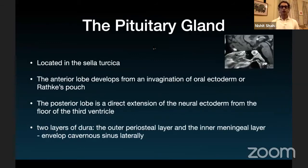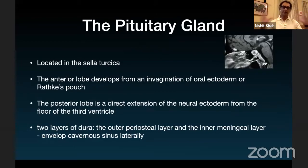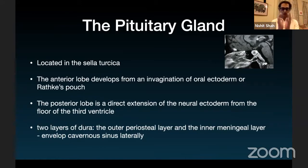The pituitary gland is what we call the master gland of the body and controls a lot of your important endocrine functions. It lies in the center of the head, cradled in the sella turcica, and consists of essentially two parts: the anterior lobe and the posterior lobe. It's compacted between two layers of dura, so when you cut one layer you're at the pituitary and you don't get a CSF leak unless you go through the back layer.